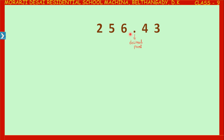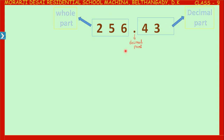The decimal point separates the whole part and the decimal part. On the left side of the decimal point we have the whole part, and on the right side we have the decimal part. In 256.43, the number 256 is the whole part. The place value of six is ones, five is tens, and two is hundreds. On the left side of the decimal point we start writing place values from right and move towards the left: ones, tens, hundreds, thousands, and so on.